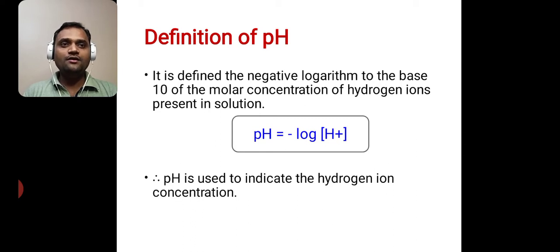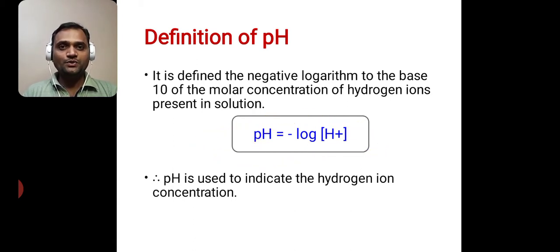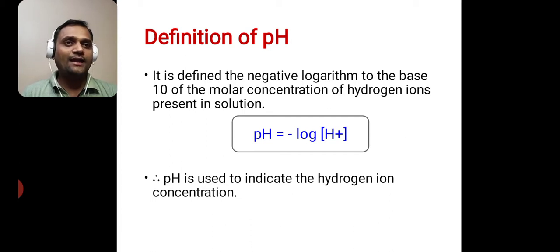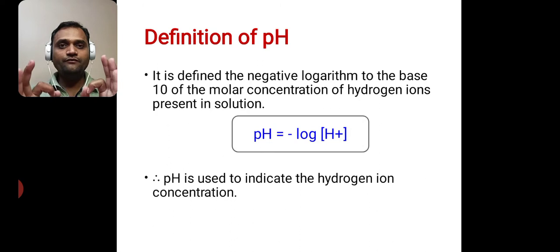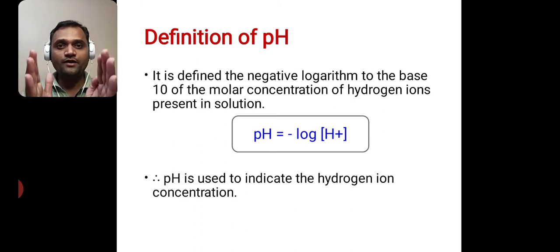pH is the negative logarithm to the base 10 of the molar concentration of hydrogen ions present in solution, written as pH = −log₁₀[H⁺]. Many students when writing the definition of pH forget to mention 'to the base 10.' So when we write the definition of pH, it is important to include that it is the negative logarithm to the base 10. That is also an important part of the definition.